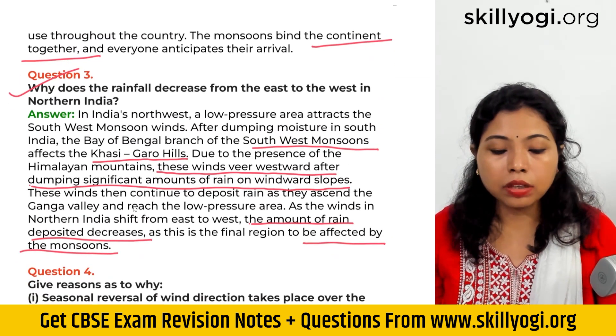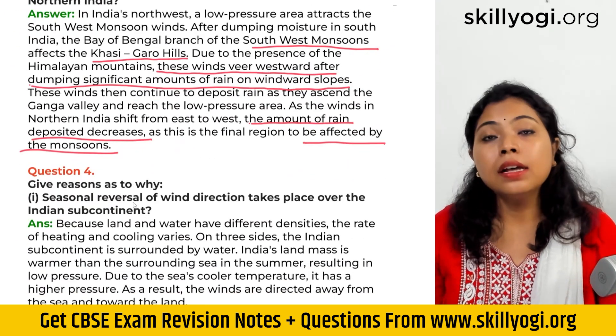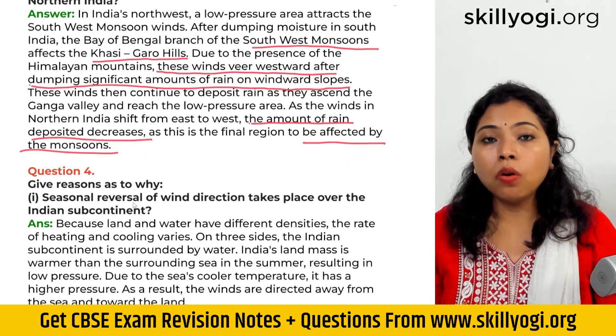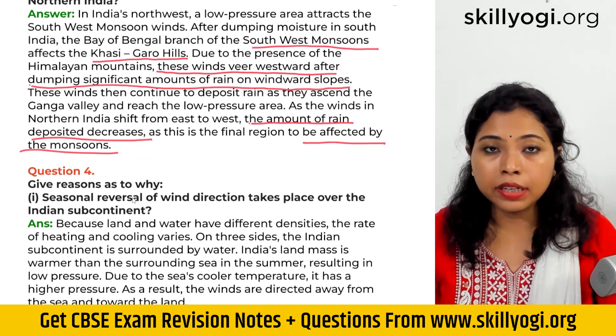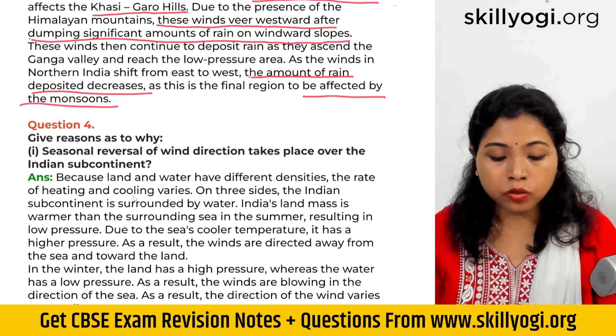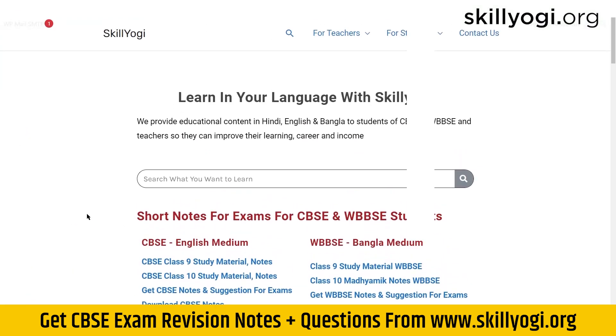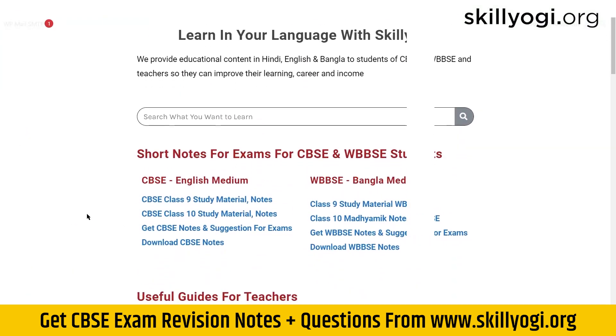That is why in west northern India there is a low-effect region of monsoon winds.